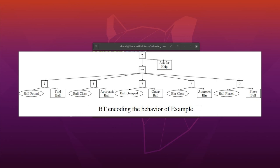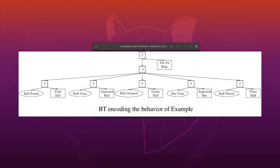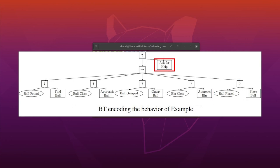This behavior tree has a couple of fallback nodes, one sequence node, and multiple leaf nodes — both condition nodes and action nodes. The robot is supposed to find a ball in its vicinity, approach the ball, grasp it, approach a bin, and place the ball there. If something fails, the behavior tree asks for help — dummy functionality for human intervention. Additionally, we will pass information between different nodes, which was not present in the previous video.